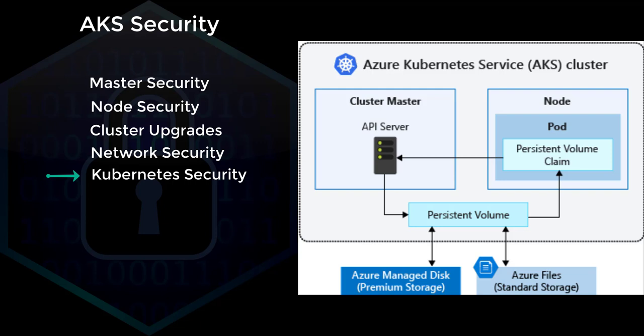Instead of storing secret information inside the pod or in the YAML files, you will be requesting the secret information which is stored on the Kubernetes API server on the master node as part of your YAML manifest. This approach ensures that the entire transaction is secure and secrets are not exposed to unauthorized entities. It's a recommendation to never commit secrets to source control or hard-code secret information in the YAML manifest.